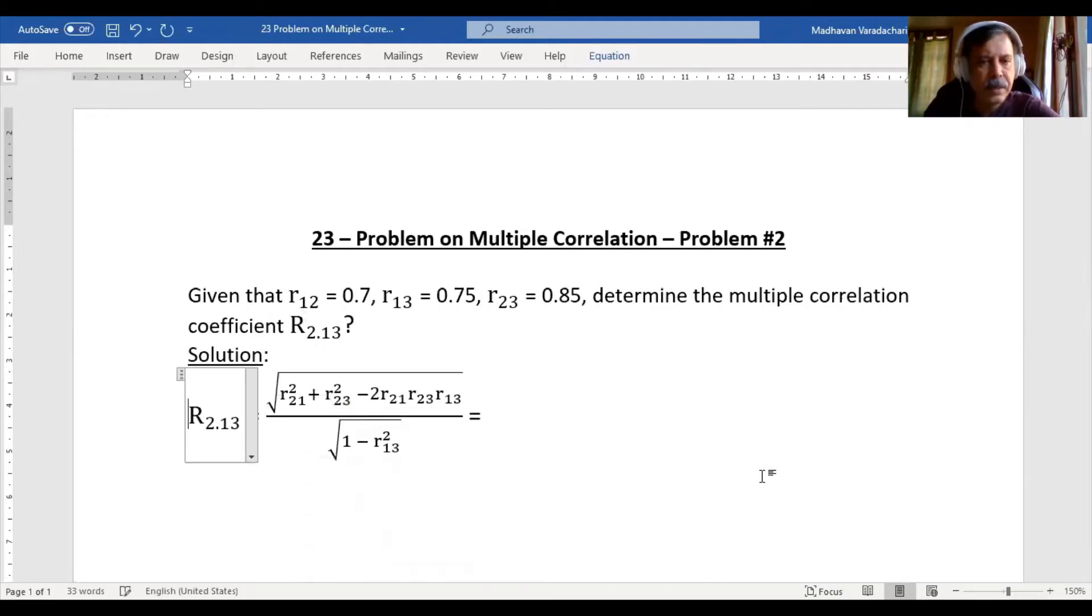...be like this: r21 squared plus r23 squared minus 2r21r23r13, the whole thing divided by one minus r13 squared. Let us have a common square root. Now substitute the values: 0.7 squared...